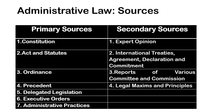There are two sources of administrative law: primary sources and secondary sources. Primary sources consist of sources that state the actual law. These sources compel state officials to apply and follow them, and some of these sources are constitution, acts and statutes, ordinance, precedent, delegated legislation, executive orders, and administrative practices.